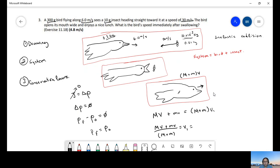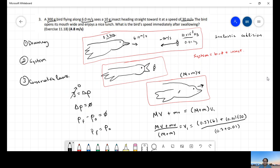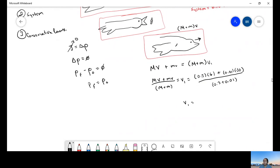So now we're going to just implement the numbers. So that is 0.3 times 6 plus 0.01 times 30. Remember, this is going to be negative, 0.01 times negative 30 because this one is moving in the opposite direction. And everything over 0.3 plus 0.01. We plug in the values.